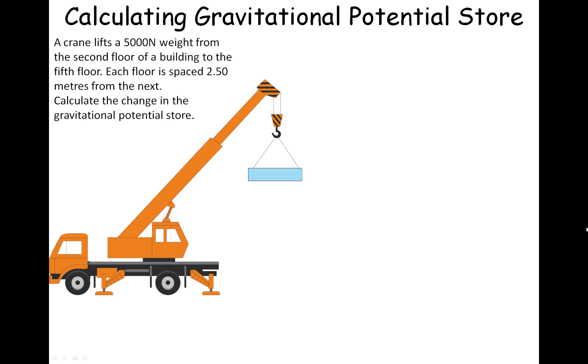So the first thing we need to do is figure out which numbers we're going to use. We have our weight, which is 5,000 newtons, but we haven't been given the change in height. What we've been given is a change in floor number and how far apart those floors are spaced, so we need to use that information to work out delta H, our change in height.